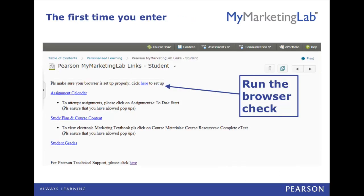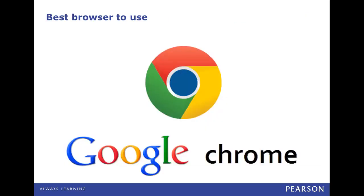90% of students who contact Pearson 24-7 Technical Support do so because they neglected to run the browser check and have problems seeing parts of My Marketing Lab. Even if you have done this for another Pearson My Lab, do it again as they may have different requirements. Then click on one of the links to enter. We strongly recommend that you use Chrome as your browser for My Marketing Lab.